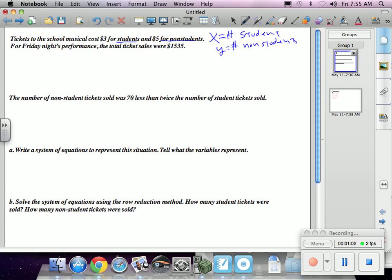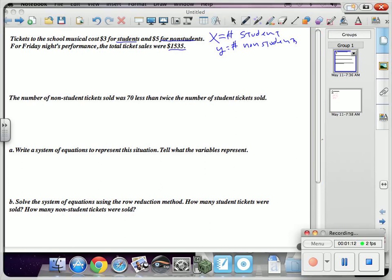So for Friday night's performance, the total ticket sales were $1,535. And we know that X is the number of students plus Y is the number of non-students. And that for students, it's $3 per ticket. And for non-students, it's $5 per ticket. And they ended up doing a total of $1,535.